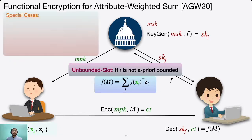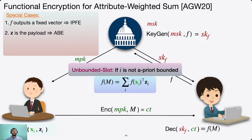To understand the significance of this functionality, consider some special cases. First, if f outputs a fixed vector, this functionality implies inner product functional encryption. Second, if z is a payload and f is a boolean function, this gives attribute-based encryption. Lastly, if f(x) is of the form y times g(x,y), where y is a fixed vector and g is a boolean function, this implies attribute-based inner product functional encryption, recently introduced in ACGU20.